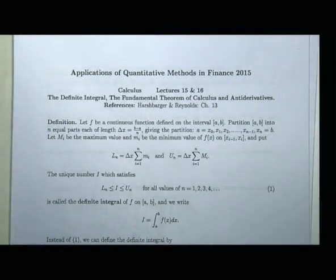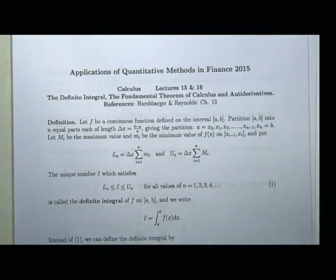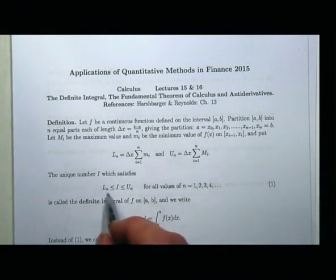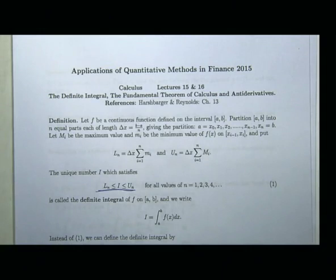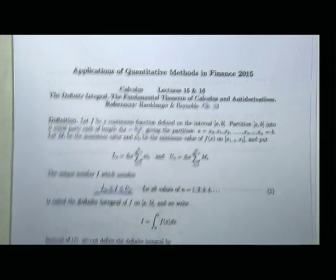Pausing to highlight this important point: the lower sum is always less than or equal to the integral, and the upper sum is always greater than or equal to the integral. That is the whole point — they are bounds, the worst case and best case scenario.